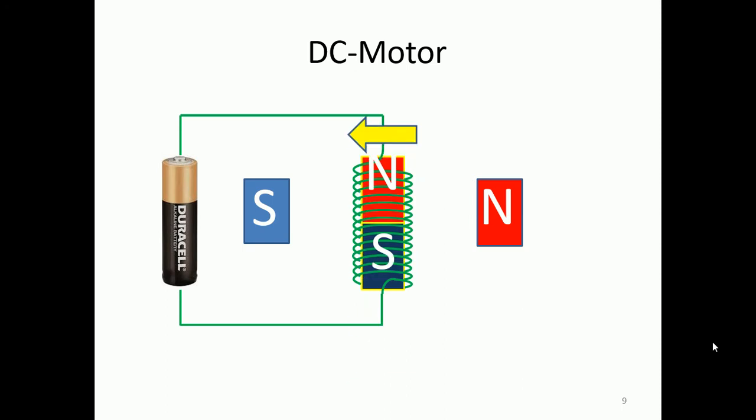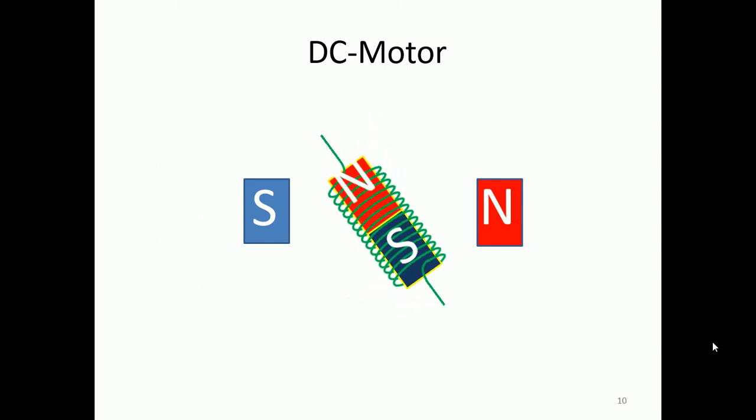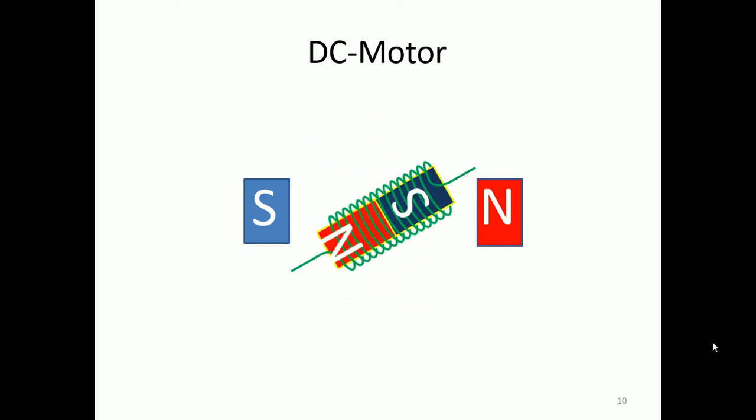So this north pole will want to go to the left hand side. Then over here the same scenario happens except that the south pole will now want to go in the opposite direction. And now because we've got two forces that are in opposite directions, you will have a movement like this.